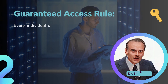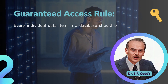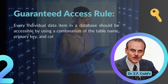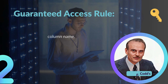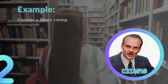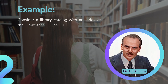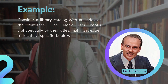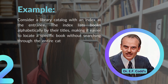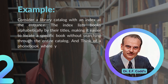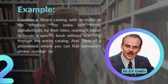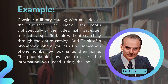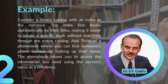Rule number two: the Guaranteed Access Rule. Every individual data item in a database should be accessible by using a combination of the table name, primary key, and column name. For example, consider a library catalog with an index at the entrance. The index lists books alphabetically by their titles, making it easier to locate a specific book. Think of a phone book where you can find someone's phone number by looking up their name.